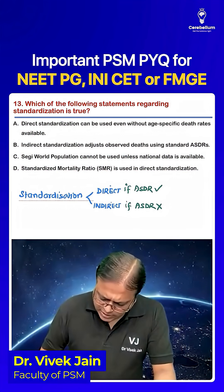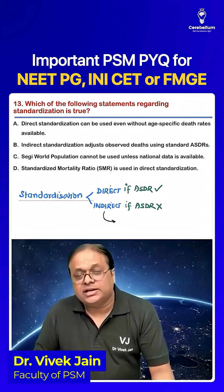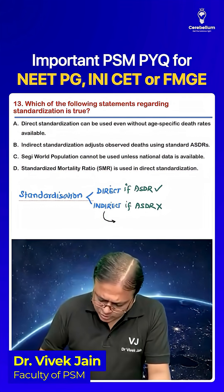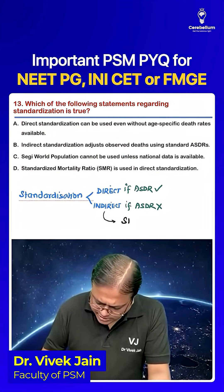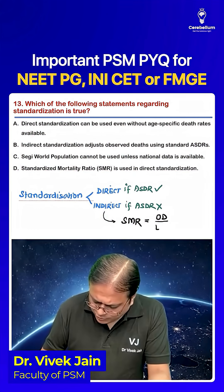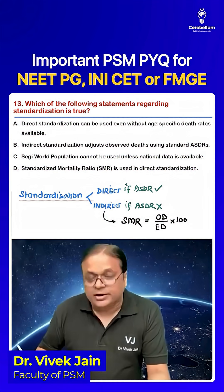How do we calculate the indirectly standardized death rate? That is known as the Standardized Mortality Ratio (SMR), which is observed deaths over expected deaths, multiplied by 100.